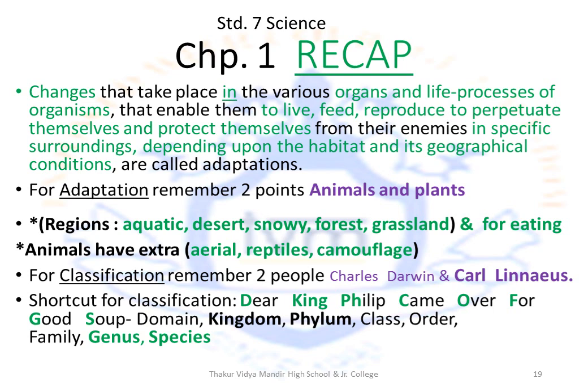Recap of Standard 7, Chapter 1 Science: Adaptations are basically changes that take place in the various organs and life processes of organisms which help them to live, feed, reproduce and protect themselves from enemies in specific surroundings depending upon the habitat and its geographical conditions. For adaptations, remember two things — animals and plants. Common adaptations are based on the regions where animals and plants are found: aquatic, desert, snowy, forest and grassland. Another common adaptation in both animals and plants is for eating.